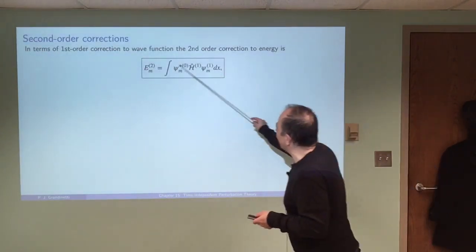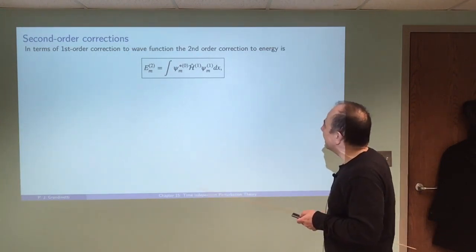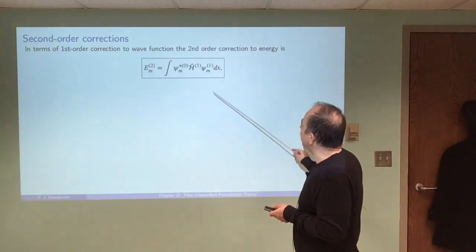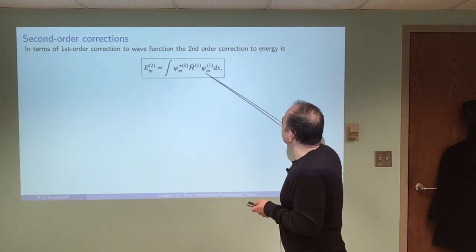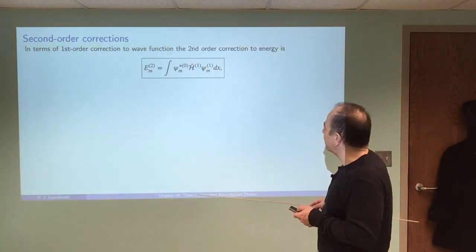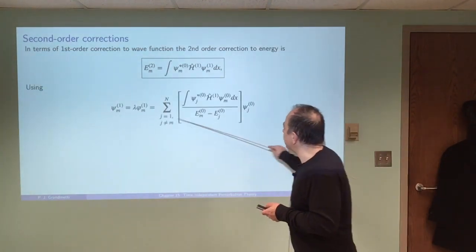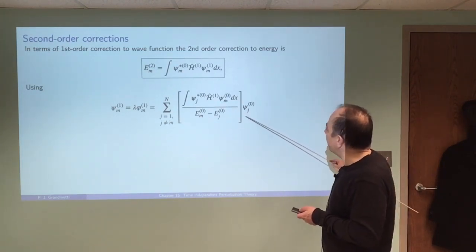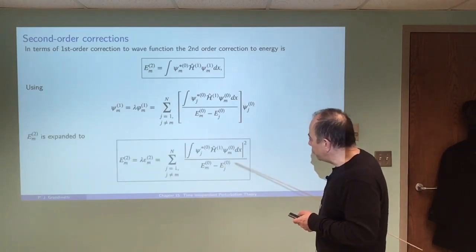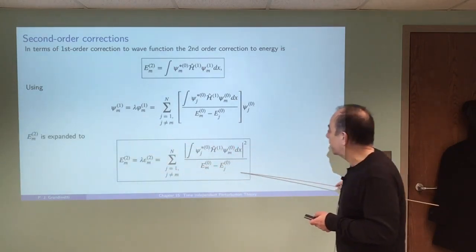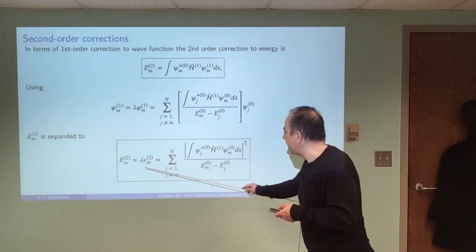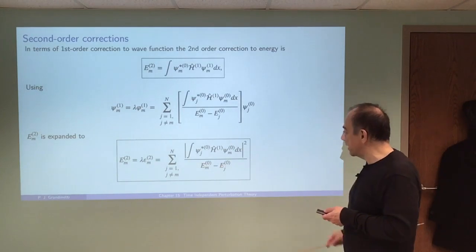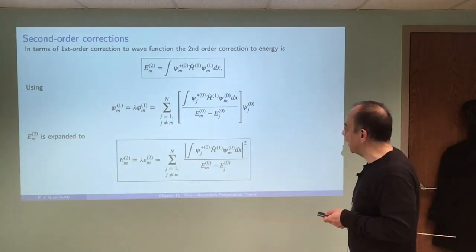Moving on to the second-order energy correction: it looks like this — see the notes for the derivation. This term involves the first-order correction we already worked out. Plugging that in, you get an expansion for the second-order energy correction that involves only the zeroth-order energy eigenstates and eigenvalues.